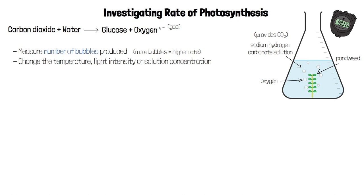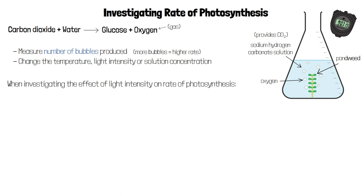We then change the conditions, such as temperature, light intensity, or solution concentration, to see how a particular factor affects the rate of photosynthesis. If we're investigating the effect of light intensity on the rate of photosynthesis, light intensity is our independent variable, and the dependent variable is the number of bubbles produced in one minute.